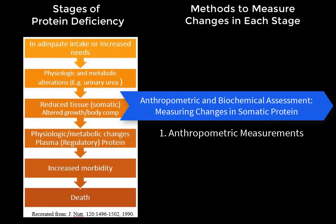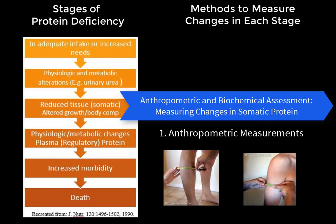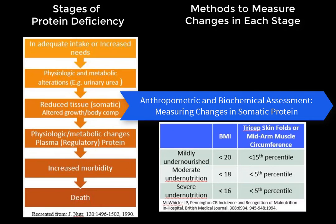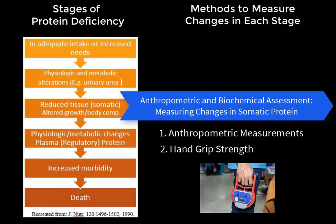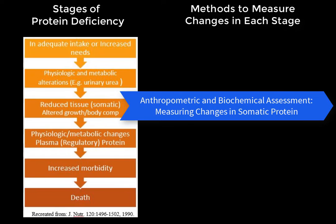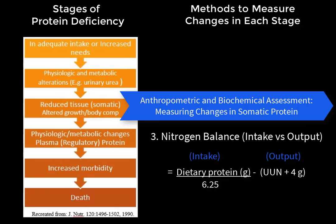To assess reduction in somatic protein, one approach uses anthropometric measurements such as calf circumference and mid-arm muscle circumference, compared to NHANES reference values. Published guidelines use anthropometric data to identify undernutrition and malnutrition, but these are ill-defined and only detect fairly severe changes, so they are not commonly used to measure a specific stage of protein-energy malnutrition. Hand grip strength is linked with the amount of lean body mass and has been found to be reduced when somatic protein decreases, making it another useful assessment method.